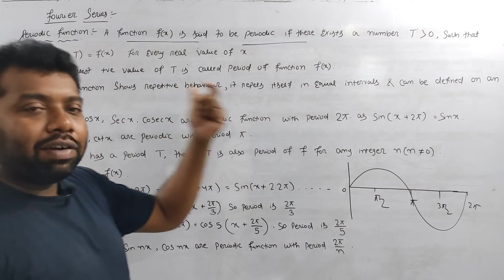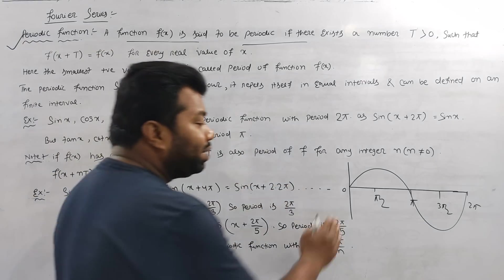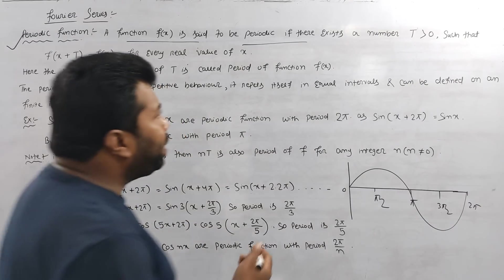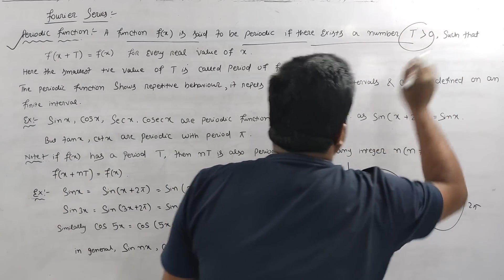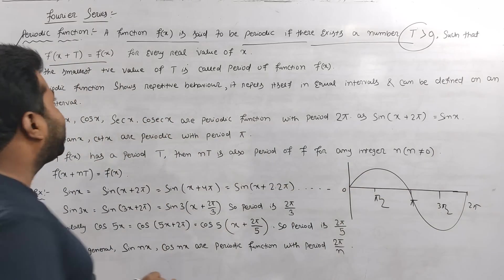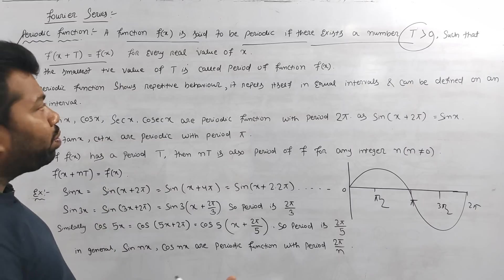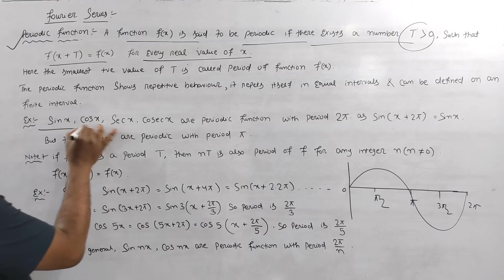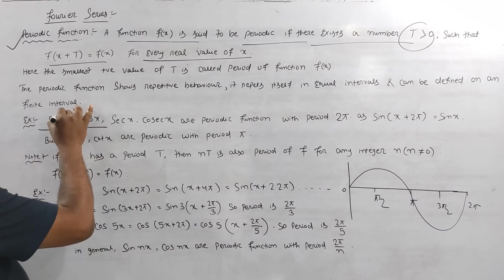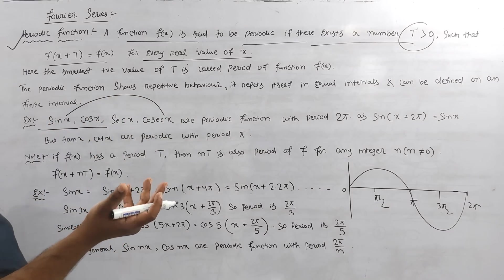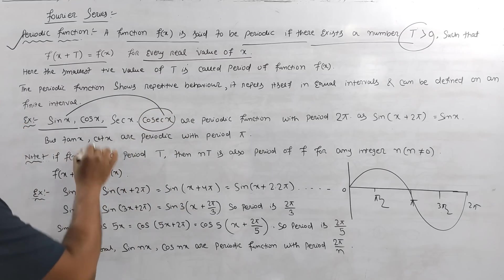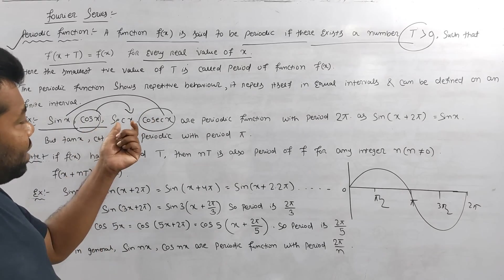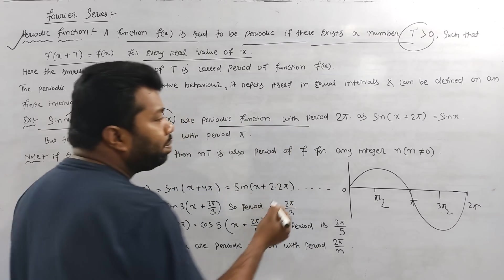You repeat it, then you repeat it again — as in sine x. The formal definition: a function f of x is said to be periodic if there exists a number T greater than zero such that f(x + T) is equal to f(x), for every real value of x. Sine x, cos x have period 2π. Cosec x also has period 2π.